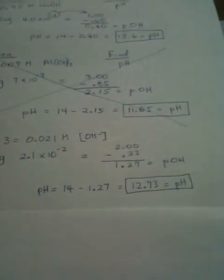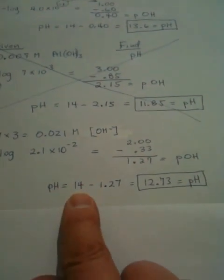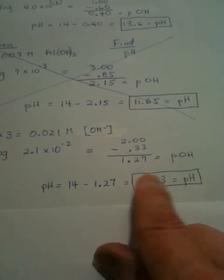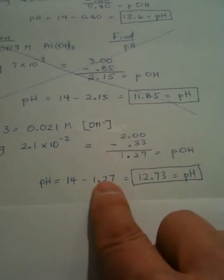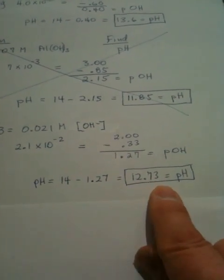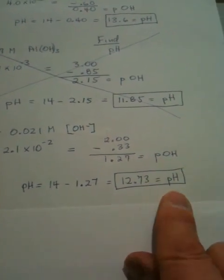Now, we just subtract from 14 like we did before. The value of the pOH subtracted from 14 becomes 12.73, and that's our pH.